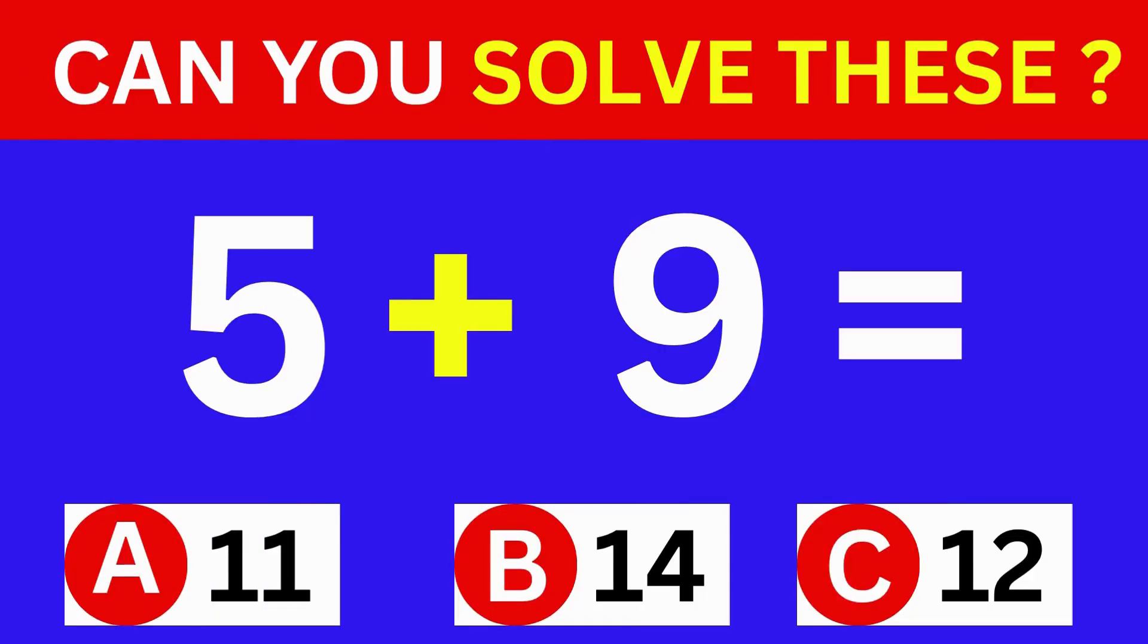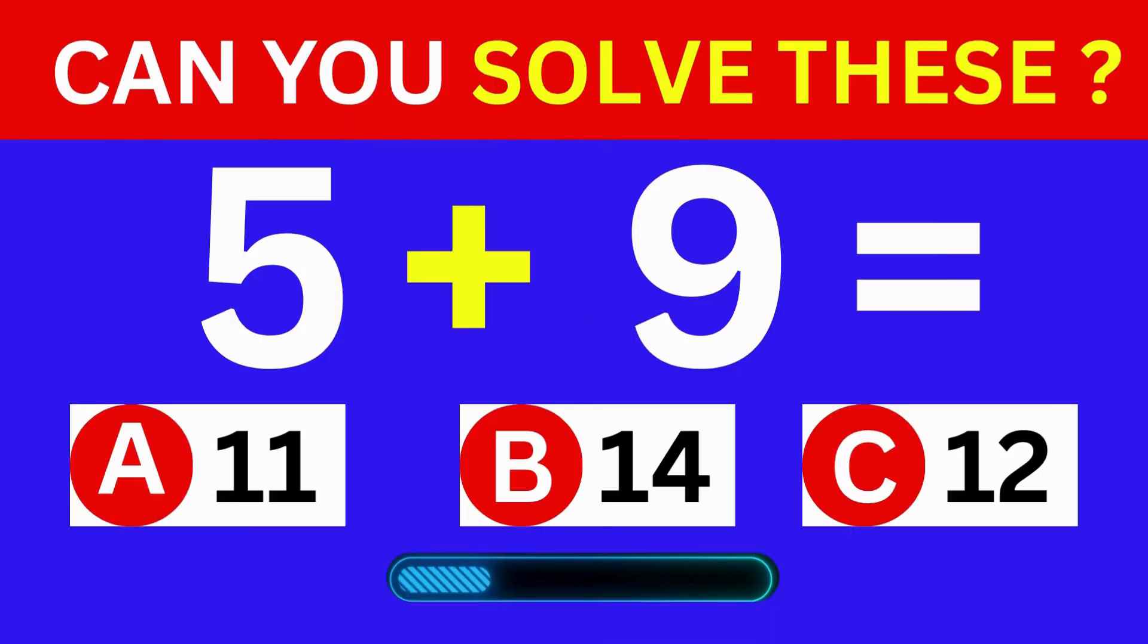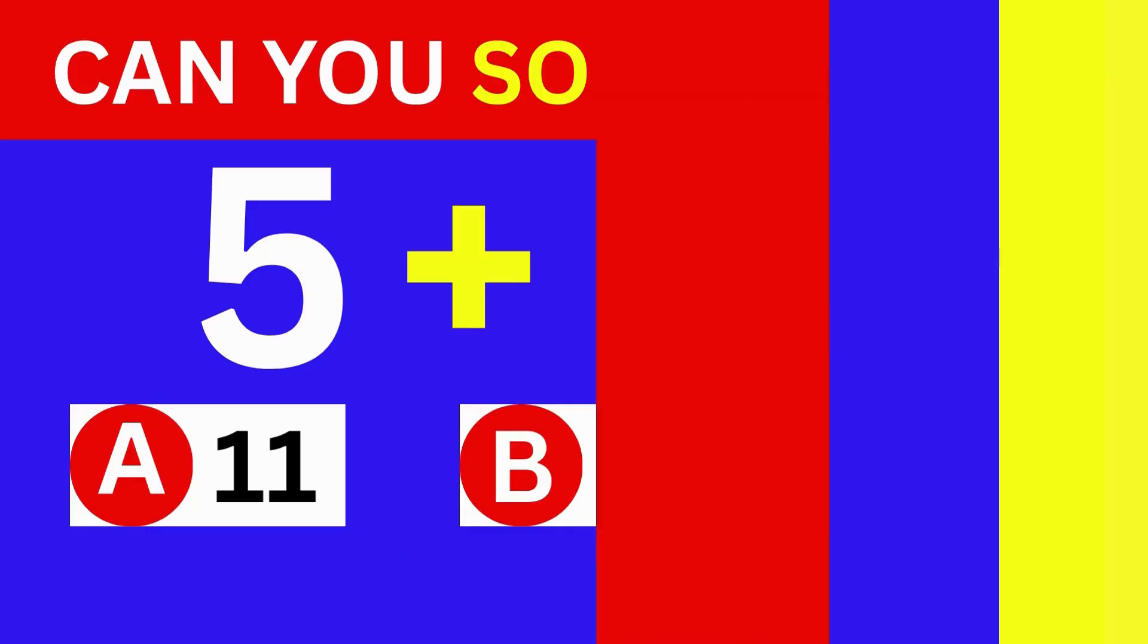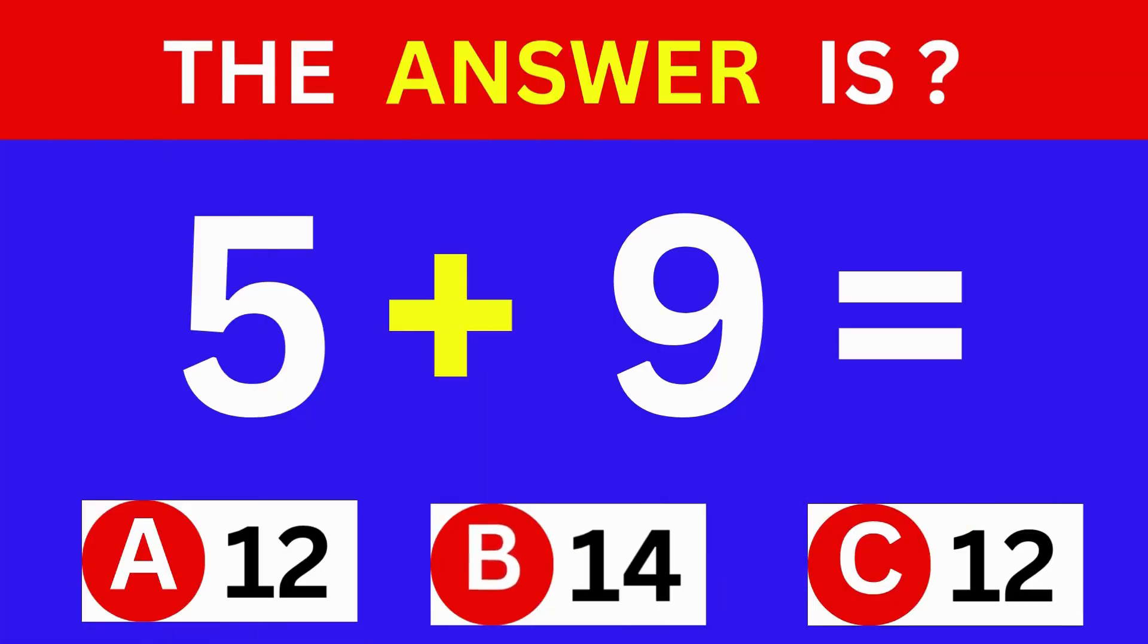5 plus 9 equals. A: 11, B: 14, C: 12. The answer is B, 14.